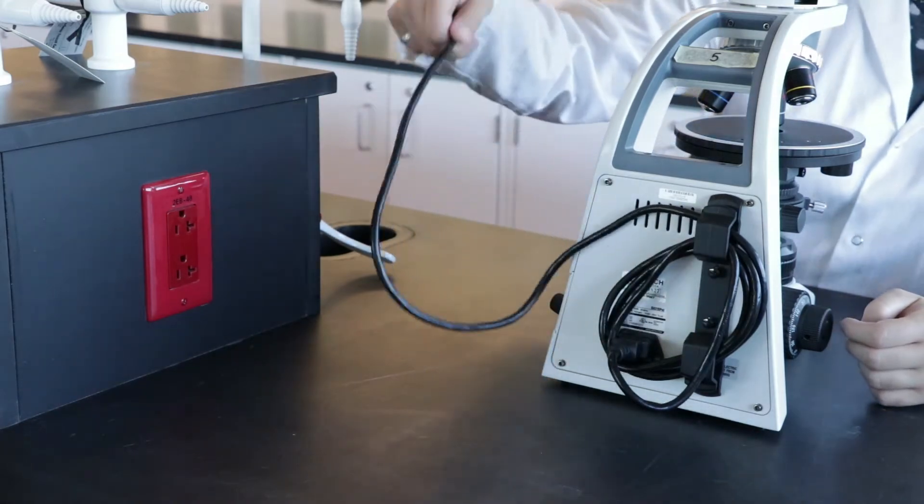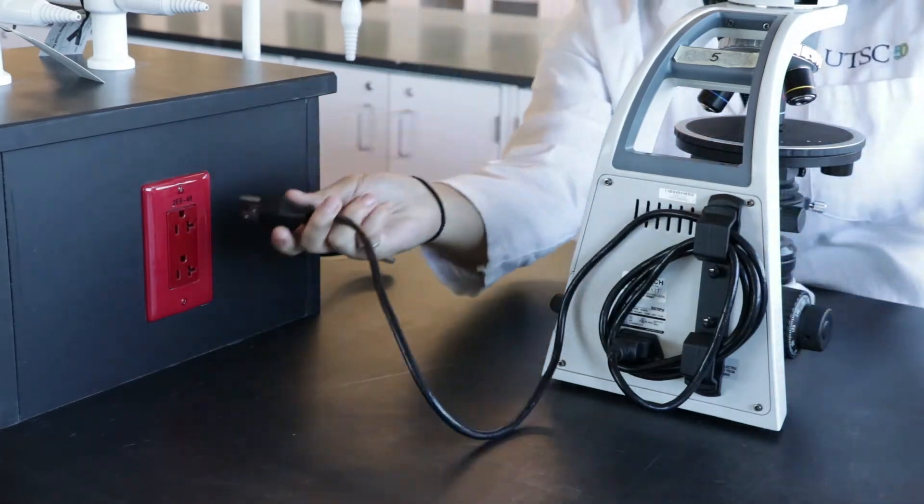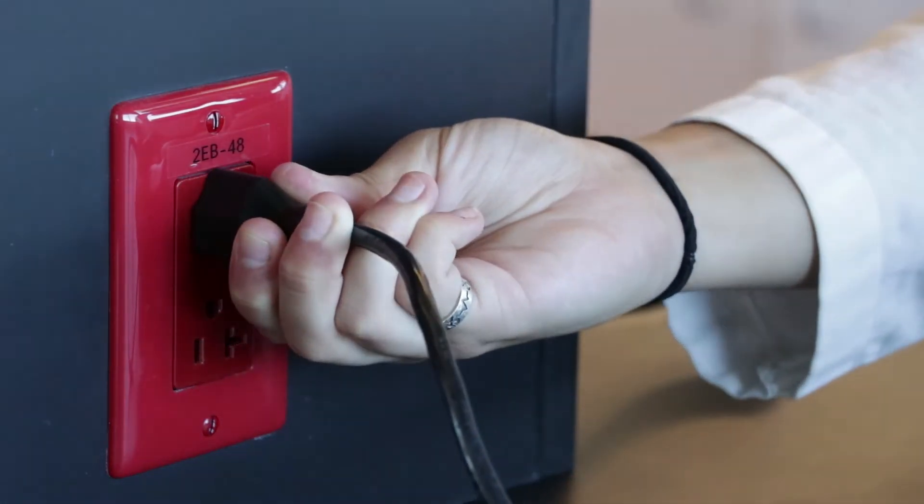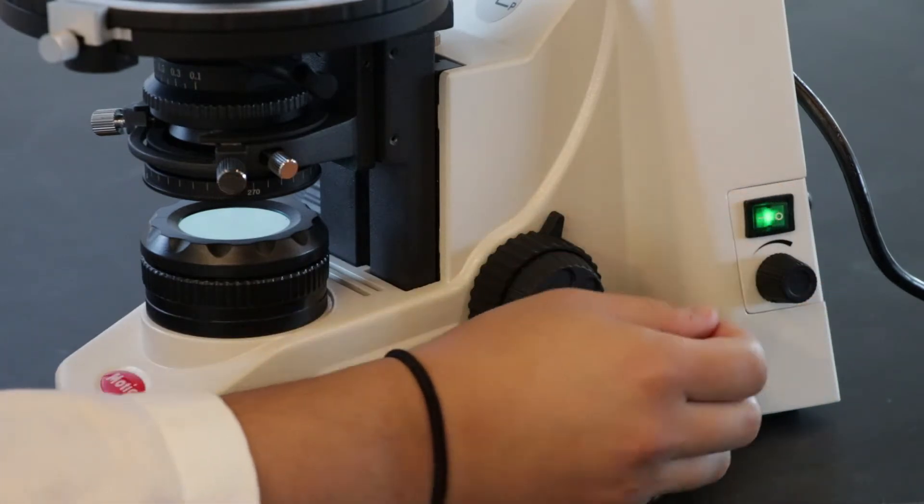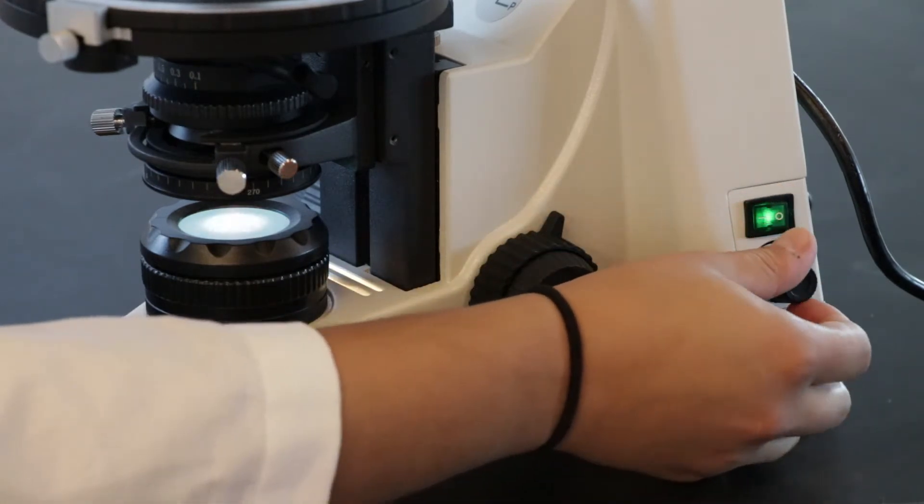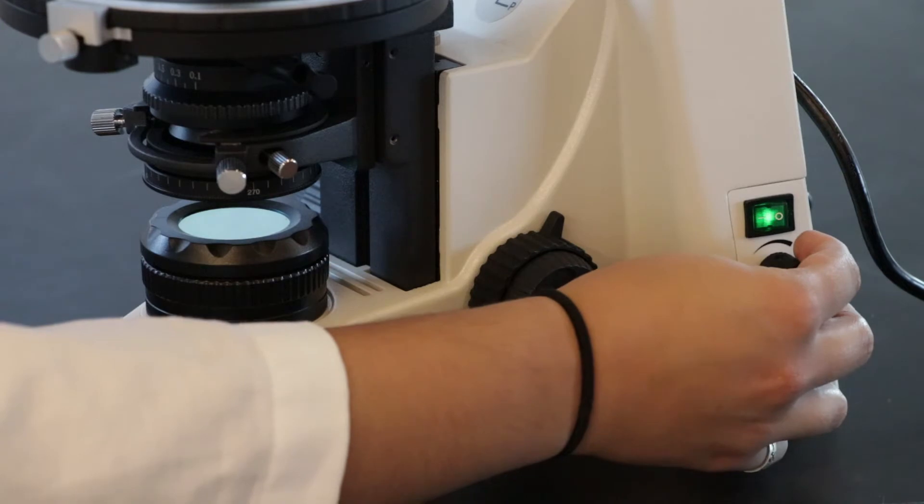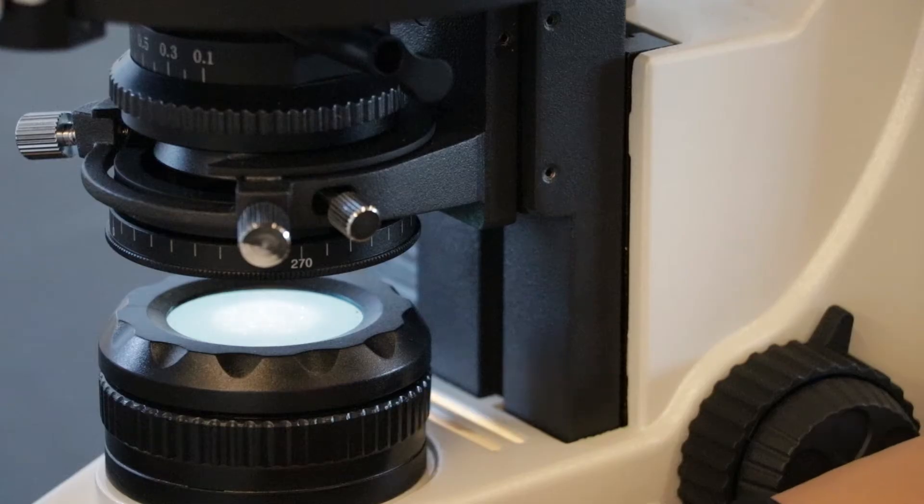Plug the microscope into the outlet at your bench spot. Turn it on by using the green power button on the back right side of the microscope. Turn the knob below to adjust the light intensity.